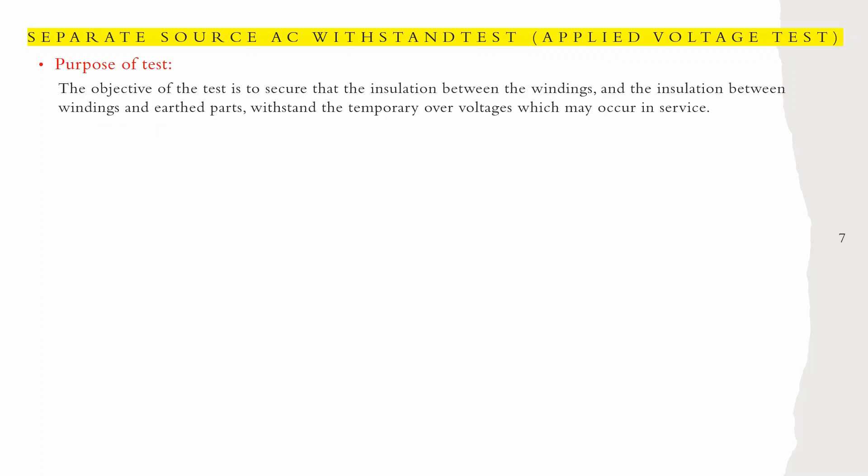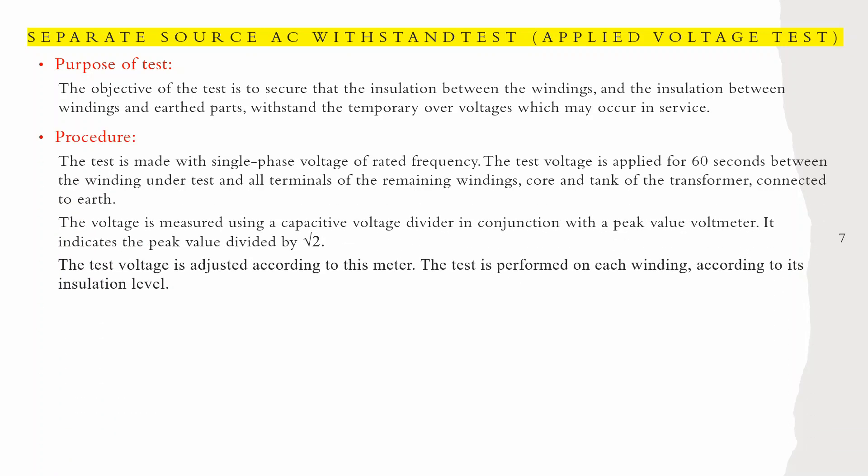The next test is the separate source AC withstand test, also called the applied voltage test. The purpose is to verify that the insulation between the winding and earth parts can withstand temporary overvoltages that may occur in service. The procedure: a single-phase voltage at rated frequency is applied for 60 seconds between the winding under test and all terminals of the remaining windings, core, and tank, connected to earth. The voltage is measured using a capacitive voltage divider in conjunction with a peak voltmeter, indicating the peak value divided by the square root of 2.